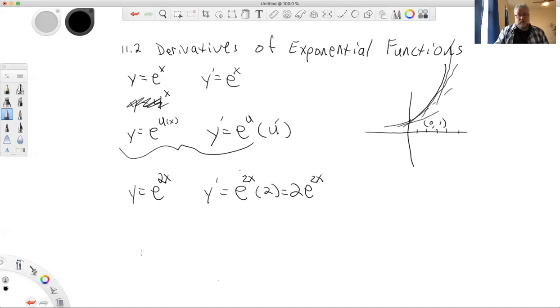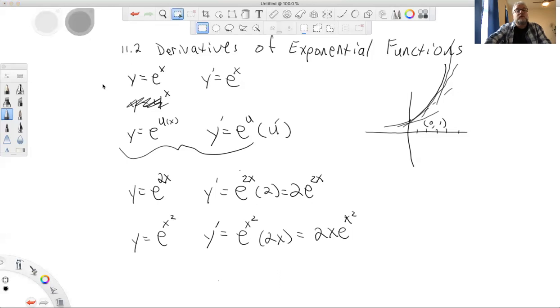Where did my cursor go? There it is. Y equals e to the x squared. Well, the derivative is going to be e to the u. Then we'll take the derivative of the group inside the exponent, 2x. So 2xe to the x squared.